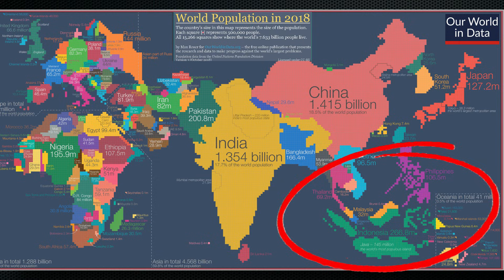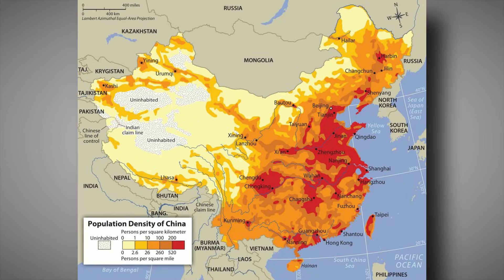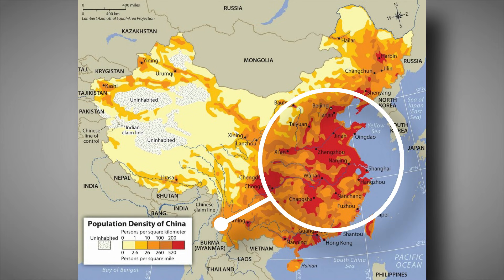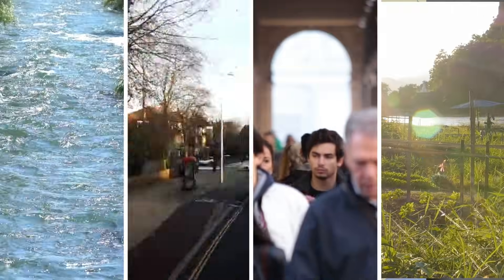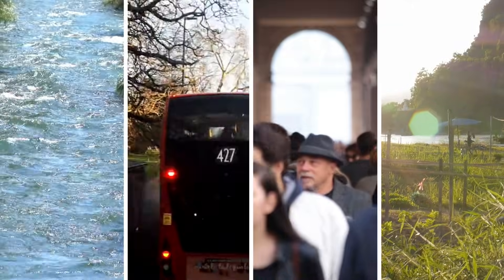If we change our scale to a more local scale, we can start to see trends occurring in all these different regions. When looking at this population density map of China, notice how the areas with the highest population density are near the coastlines and rivers. This isn't by chance — when we look at different population clusters around the world, we can see common themes.